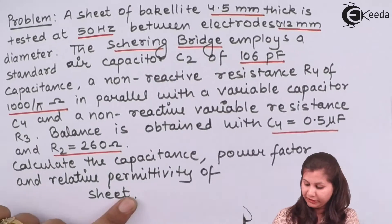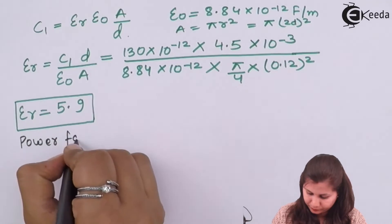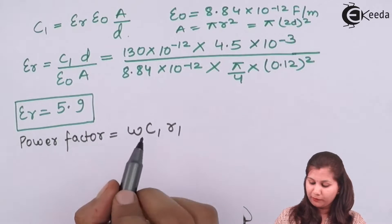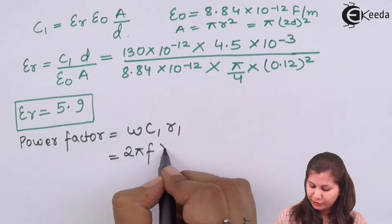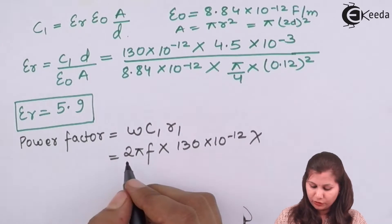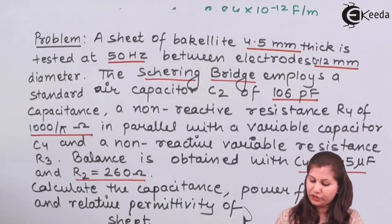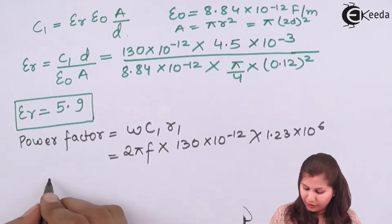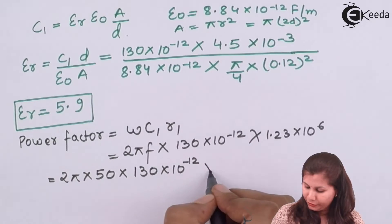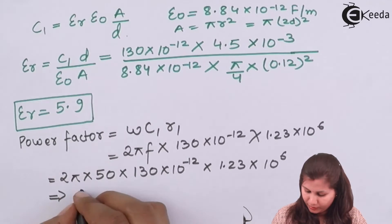We also need to calculate the power factor, also called the dissipation factor. Its formula is: power factor = ωC1·R1 = 2πf·C1·R1. Substituting f = 50 Hz, C1 = 130 × 10⁻¹² F, and R1 = 1.23 × 10⁶ ohms, the power factor comes out to be 0.05.